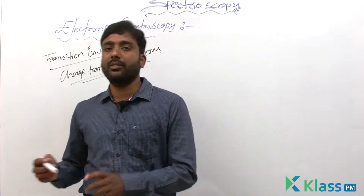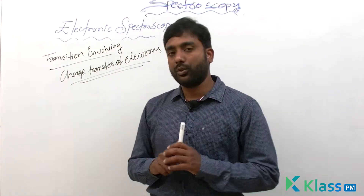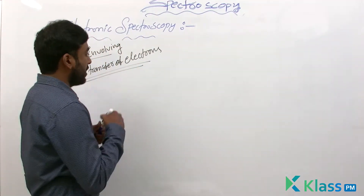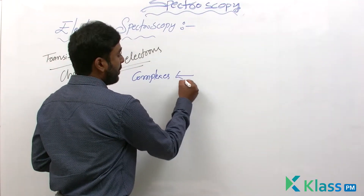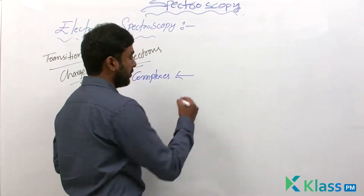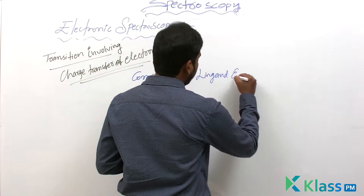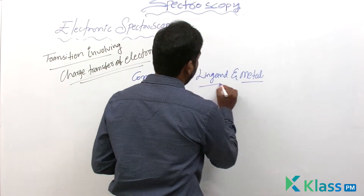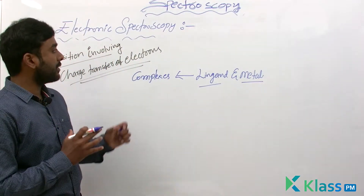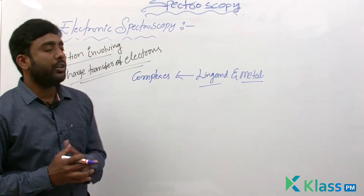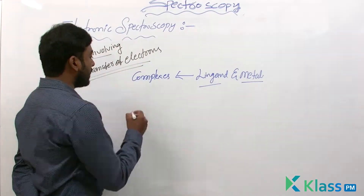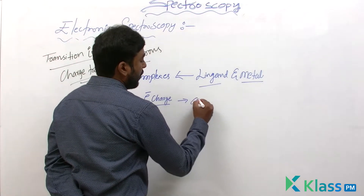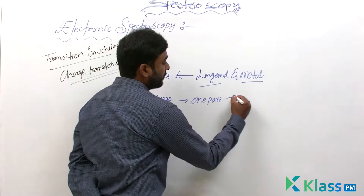In today's class we will discuss the transition involving charge transfer of electrons. This kind of transition mainly occurs in complexes which are formed by the coordination of a ligand and a metal. In such inorganic complexes, the electron charge transfer occurs from one part of the complex to another part of the complex.